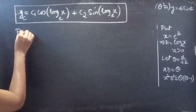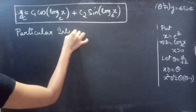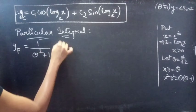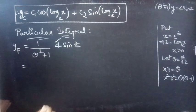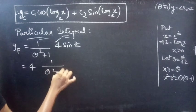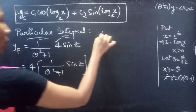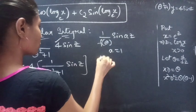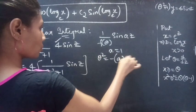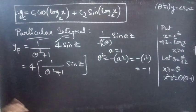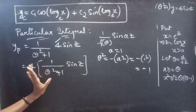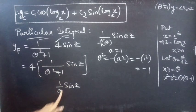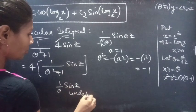Now let's find the particular integral: yp equals 1 by f(theta) into 4 sin z. Taking 4 as a constant gives 4 times 1 by (theta squared plus 1) into sin z. Comparing sin z with sin(az), we get a equals 1. Replacing theta squared by minus a squared gives minus 1, which makes the denominator zero — giving 1 by 0, which is undefined. So we must use the special case formula.